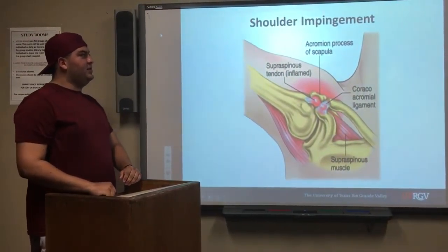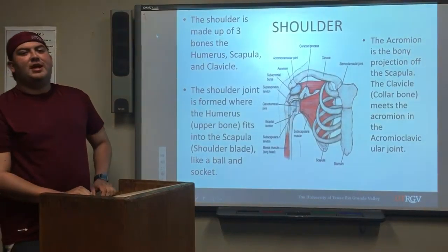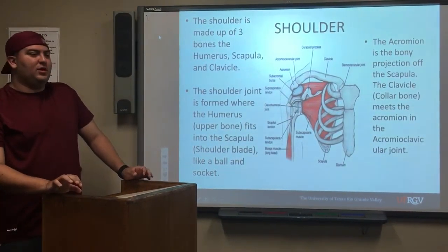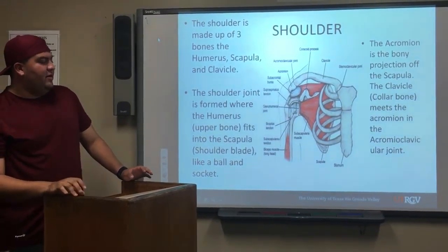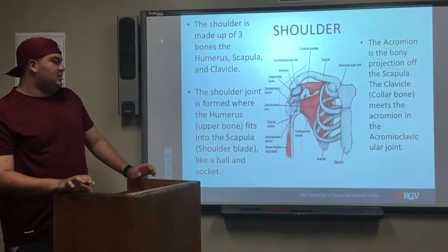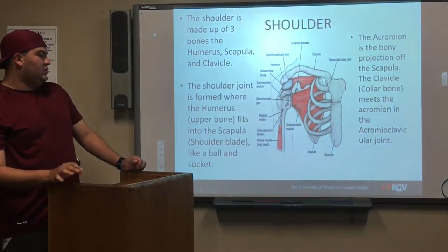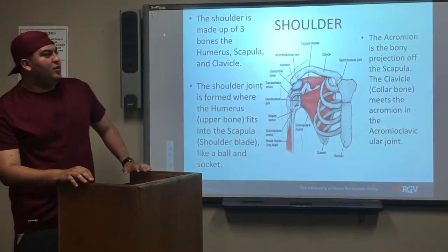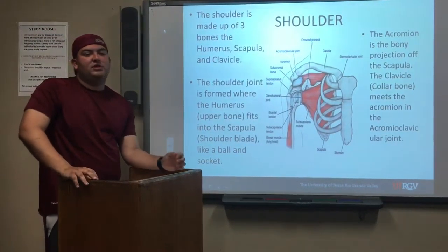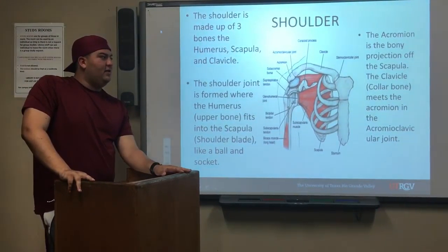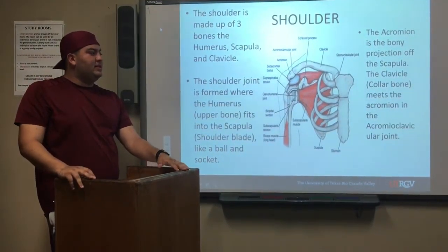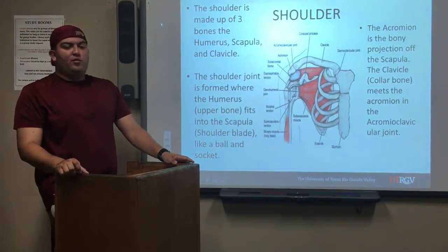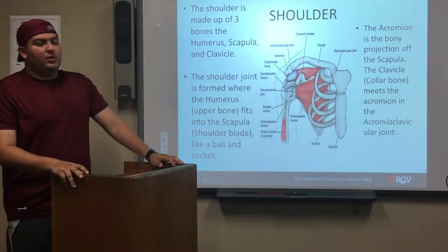The shoulder is made up of three bones: the humerus, the scapula, and the clavicle. The shoulder joint forms where the humerus, the upper bone, fits into the scapula, the shoulder blade, like a ball and socket. The acromion is the bony projection off the scapula, and the clavicle bone meets the acromion in the acromioclavicular joint.